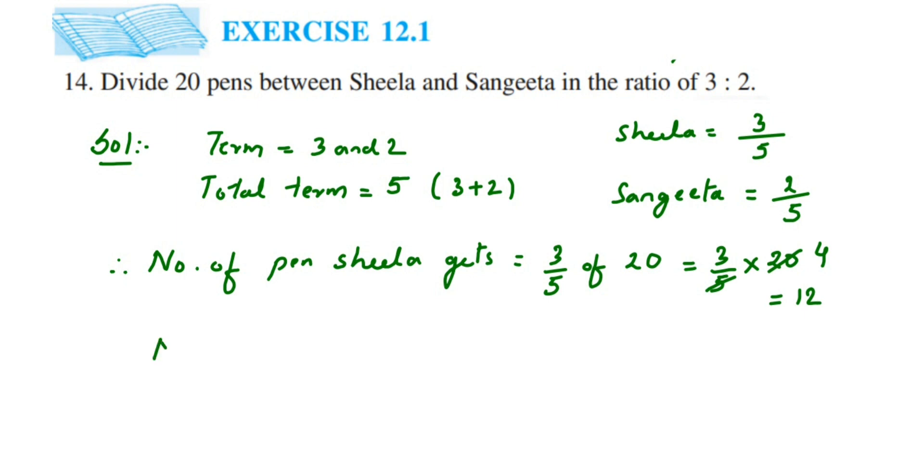Same way for Sangeeta: number of pens Sangeeta gets is 2-fifths, right? 2 by 5 of 20, so it is 2 by 5. Off means multiplication, and then 20. Cancel 5 and 20: 5 ones are 5, 4s are 20, so 4 twos are 8. So 8 pens go to Sangeeta.